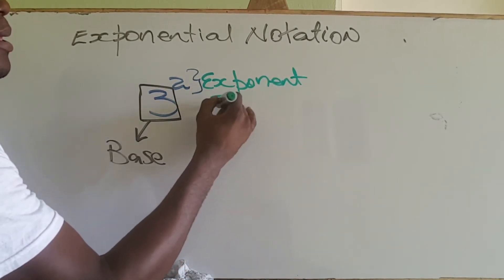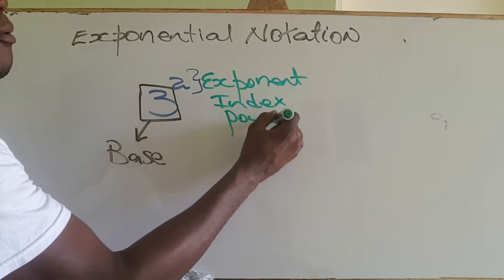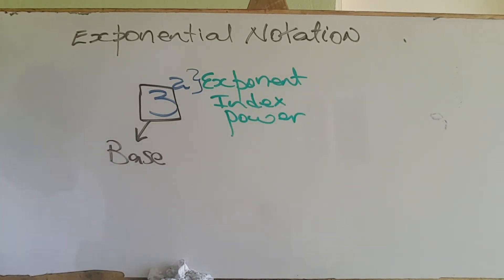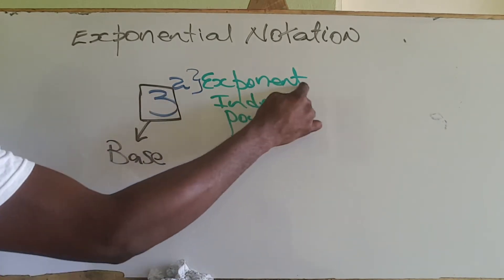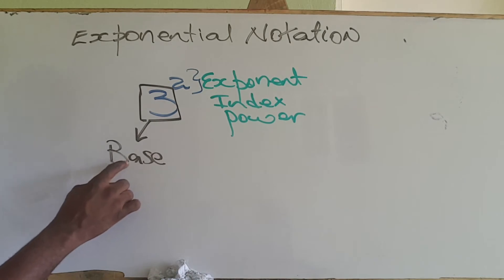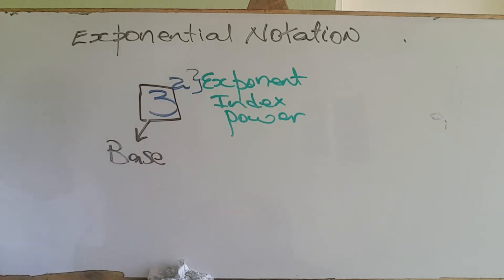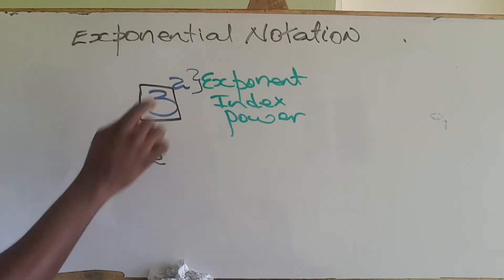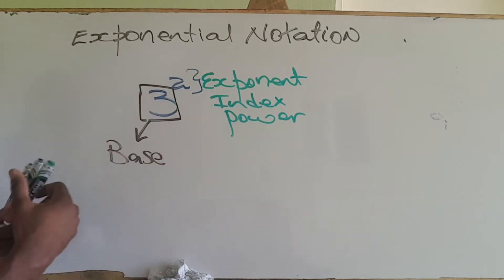People also call it the index or the power, so we have various names that we use for this. The two is called the exponent, the index, or the power, and this part is the base. This idea is what we call exponential notation.